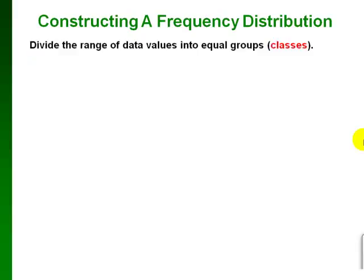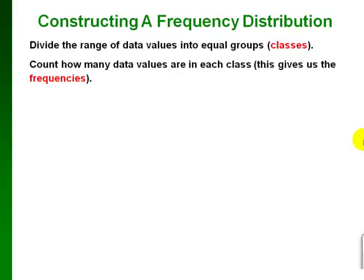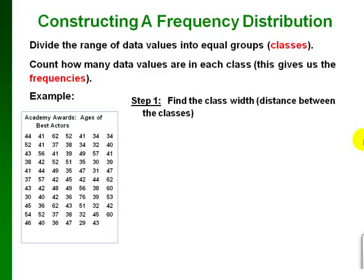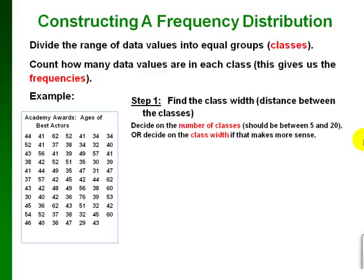To construct a frequency distribution, we divide the range of data values into equal groups called classes, sometimes also called bins. Once we've divided the range into equal classes, we count how many data values fall into each class — that gives us the frequencies. We have a list of ages of actors that won the Best Actor award at the Academy Awards. Step one is to find the class width, which is the distance between classes. The number of classes should be somewhere between 5 and 20 for a good frequency distribution.